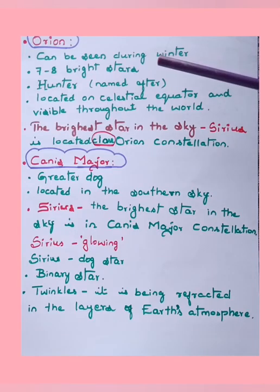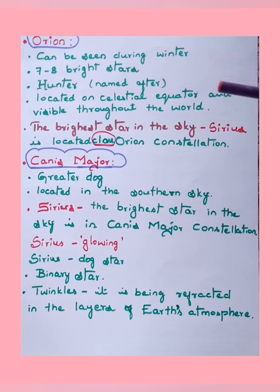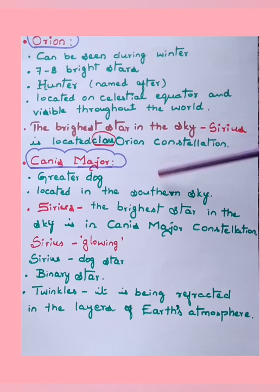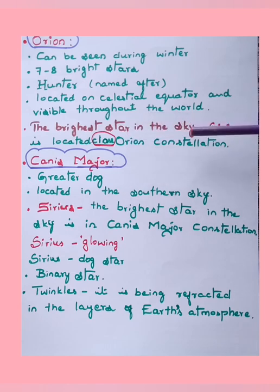Orion can be seen during winter. It contains about seven to eight bright stars, is named after a hunter, and is located on the celestial equator — visible throughout the world. There may be multiple choice questions from this concept. The brightest star in the sky, Sirius, is located close to the Orion constellation. If you draw an axis through Orion's three brightest stars, it will reach Sirius.